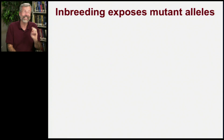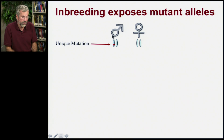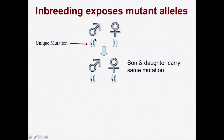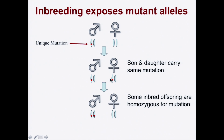What happens with close inbreeding is it exposes mutant alleles. Remember, we all carry a few mutations around. Let's say your brother had that weird mutant form — he has a unique mutation. If he then starts a family, his son and daughter may, by chance, both possess his mutation because they're descended from him. And if they marry each other, there's a chance that you'd have this brand new mutation from their father end up in the homozygous form in their children. The grandson here would be homozygous for an allele that first appeared in his grandfather.